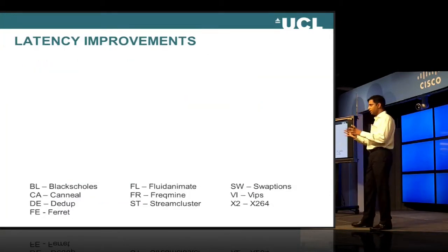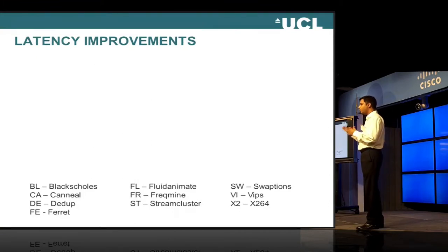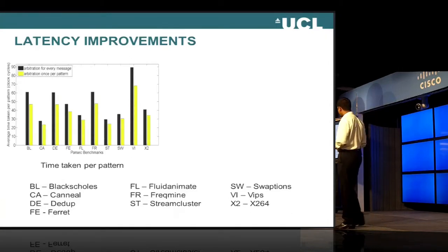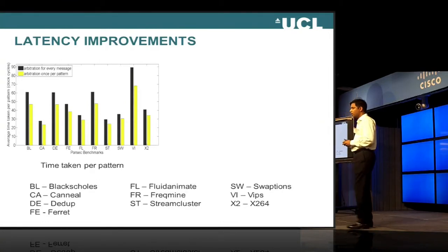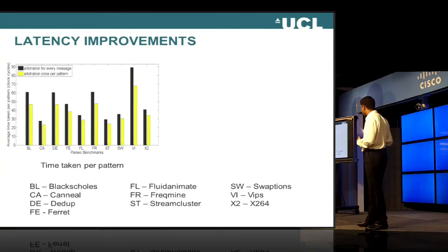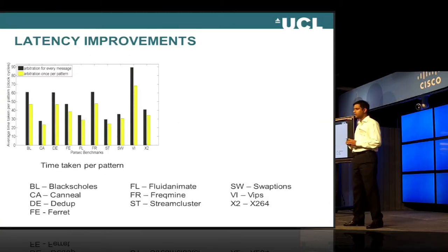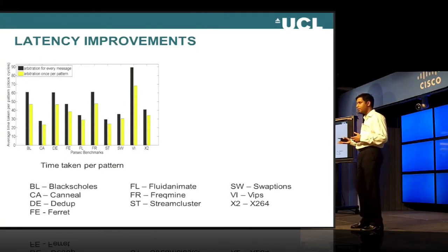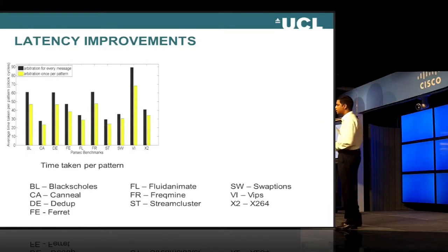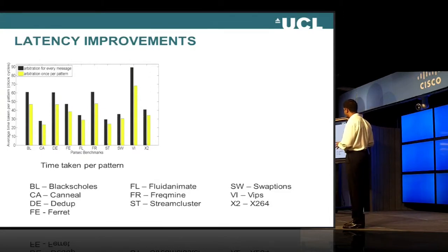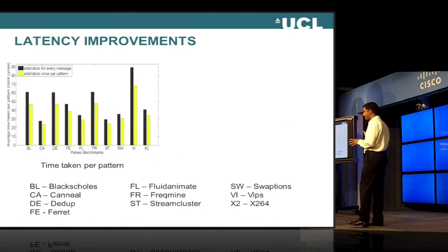Now, in terms of the results, we needed to simulate to see how this contention affected the actual gains. The first graph represents the average time taken per pattern. We measured how much time it actually takes to complete the pattern across all ten benchmarks. The yellow part of the graph represents arbitration done only once per pattern — our algorithm — and the black one represents arbitration done every message — our baseline. All the yellow ones are smaller. One thing to consider is that the serialization time is heavily dependent on the nature of the message, whether it is a control message or a data message.